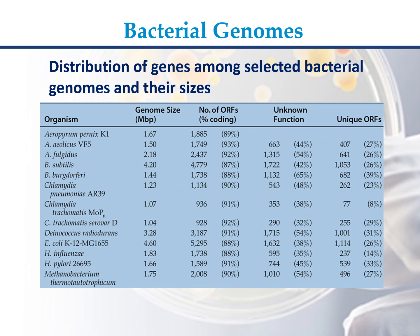C. trachomatis MOPR: genome size 1.07 Mb, 936 ORFs (91%), unknown function 353 (38%), unique ORFs 77 (8%). C. trachomatis serovar D: genome size 1.04 Mb, 928 ORFs (92%), unknown function 290 (32%), unique ORFs 255 (29%). Deinococcus radiodurans: genome size 3.28 Mb, 3127 ORFs (91%), unknown function 1715 (54%), unique ORFs 1001 (31%).